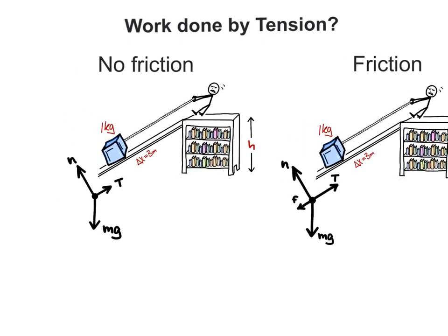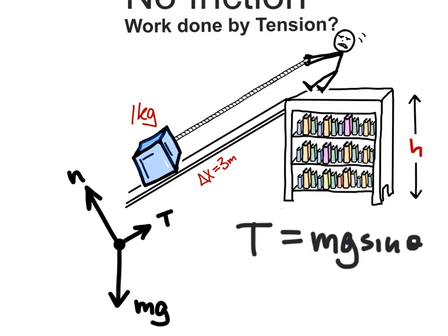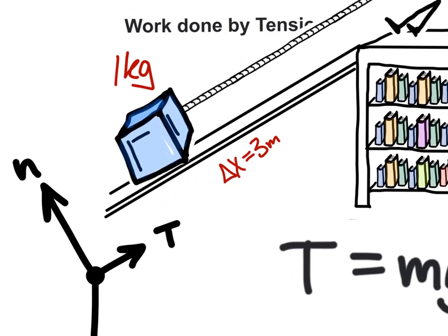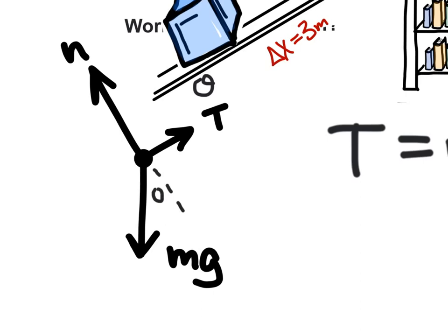In our frictionless example, we need enough tension to counteract the downwards component of gravity. So we can say T is equal to or greater than m g sin theta. Where theta is the angle between the floor and the ramp.